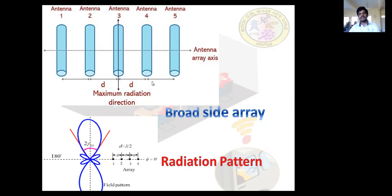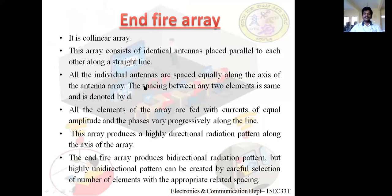The next type is the endfire array. The endfire array is also a collinear array. It consists of identical antennas placed parallel to each other along a straight line, called the array axis, just like the broadside array. The spacing between any two consecutive antennas is uniform, denoted by the letter D. However, the key difference is in how the elements are fed: in the endfire array, all elements are supplied with the same magnitude of current, but the phase difference varies progressively.